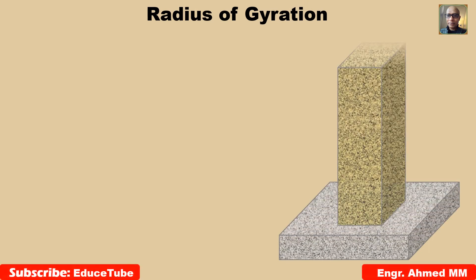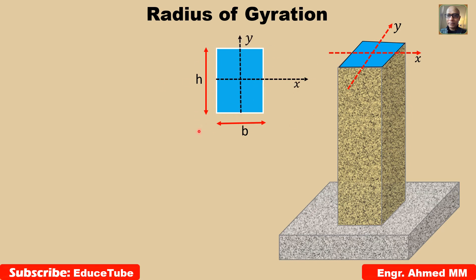I have taken here a column resting on a footing, having section with two axes: x-axis and y-axis. Width is b, height is h. For these rectangular cross sections, moment of inertia we can write as bh cube by 12 and area is bh.